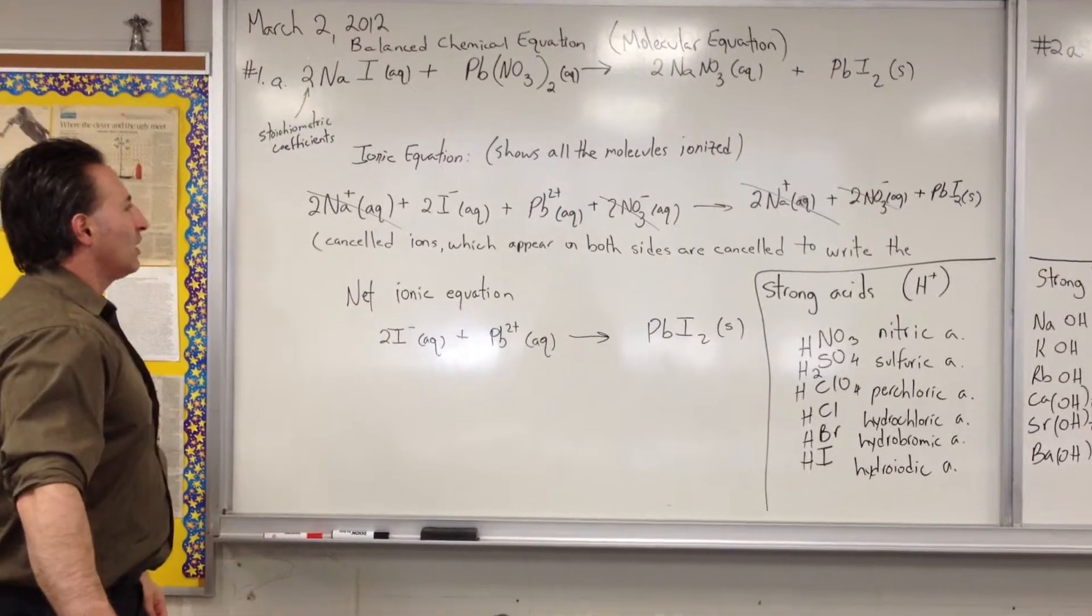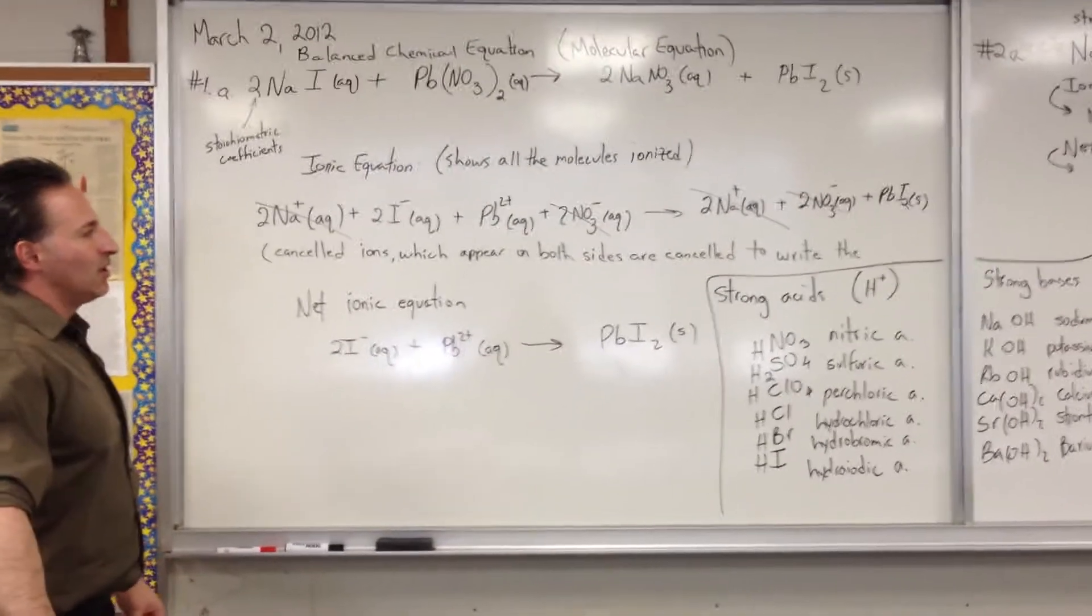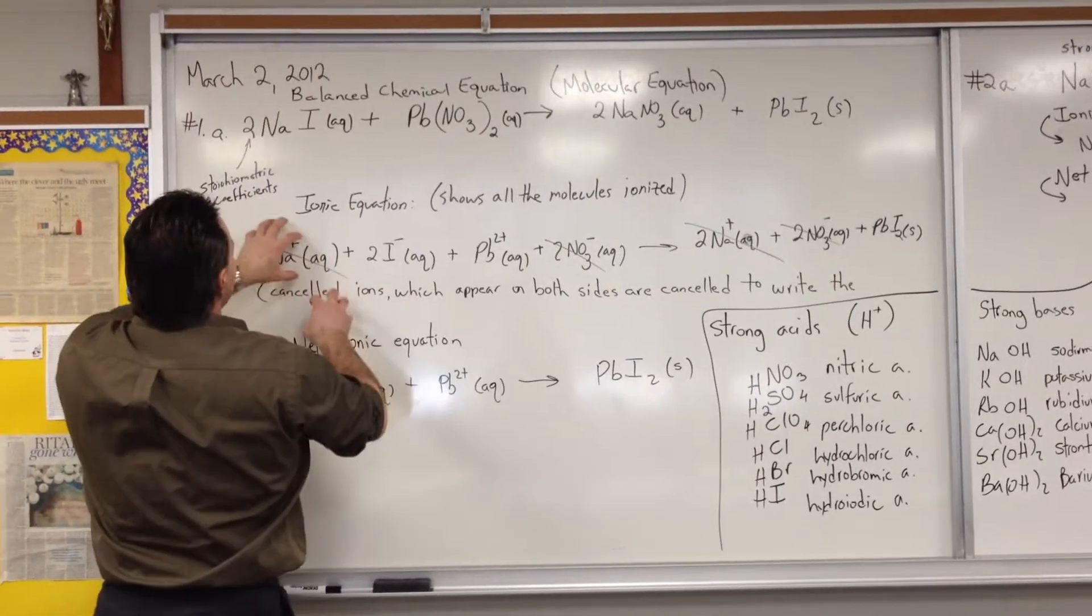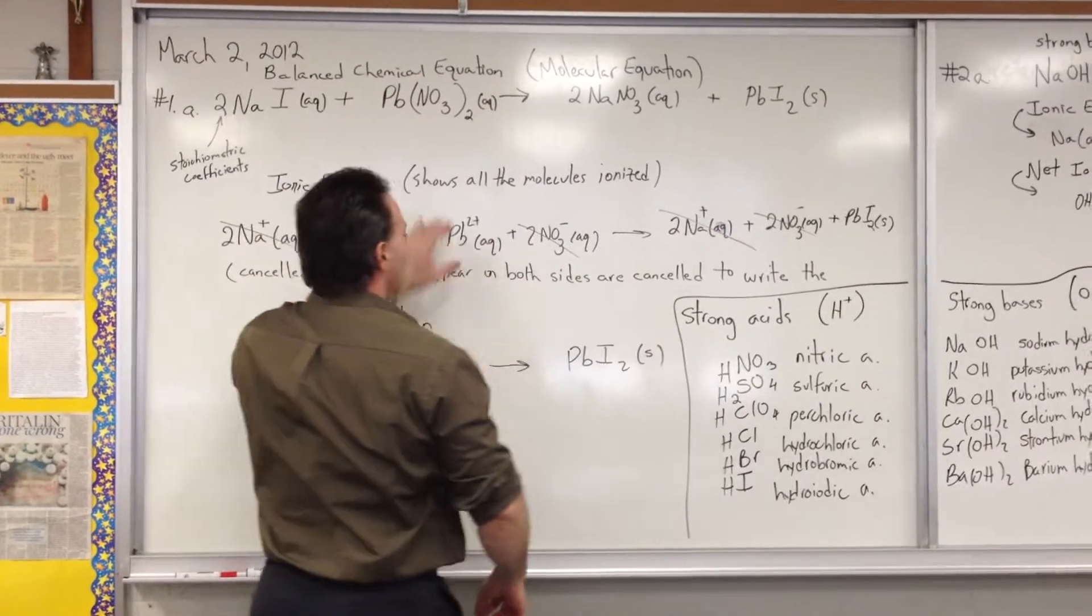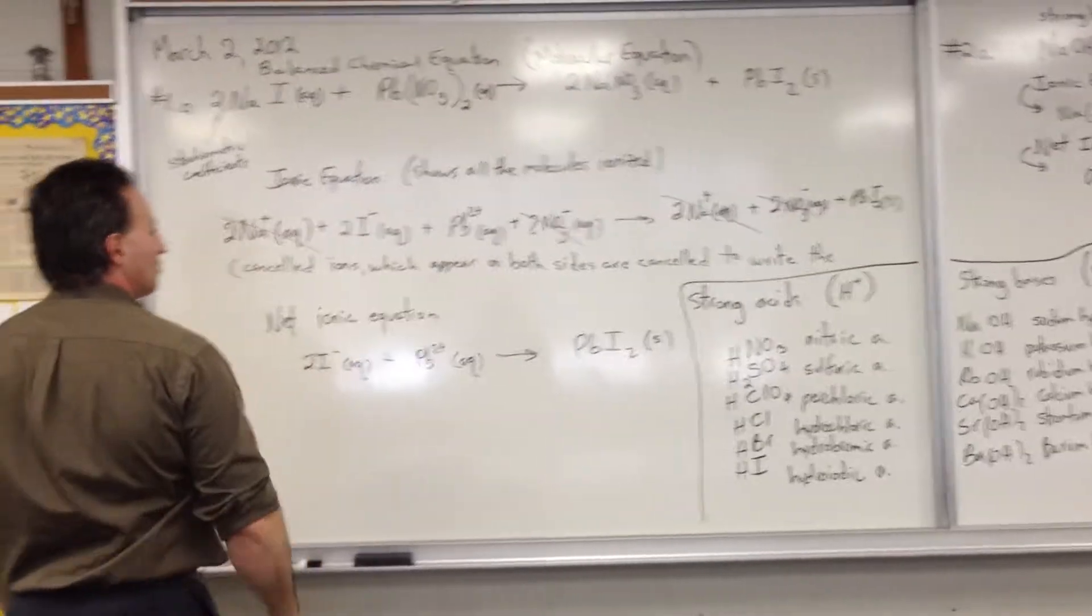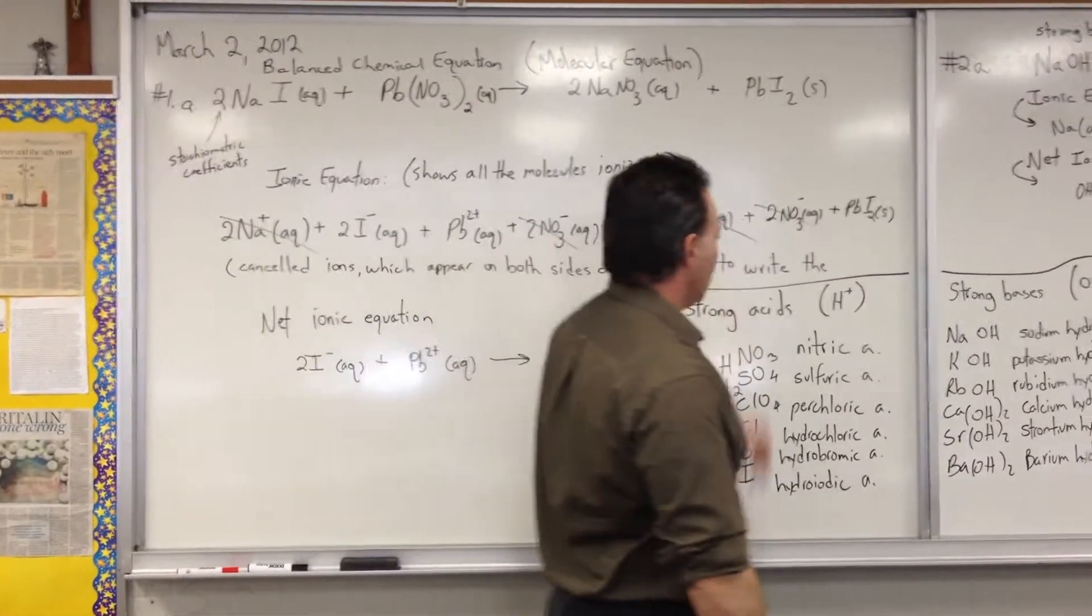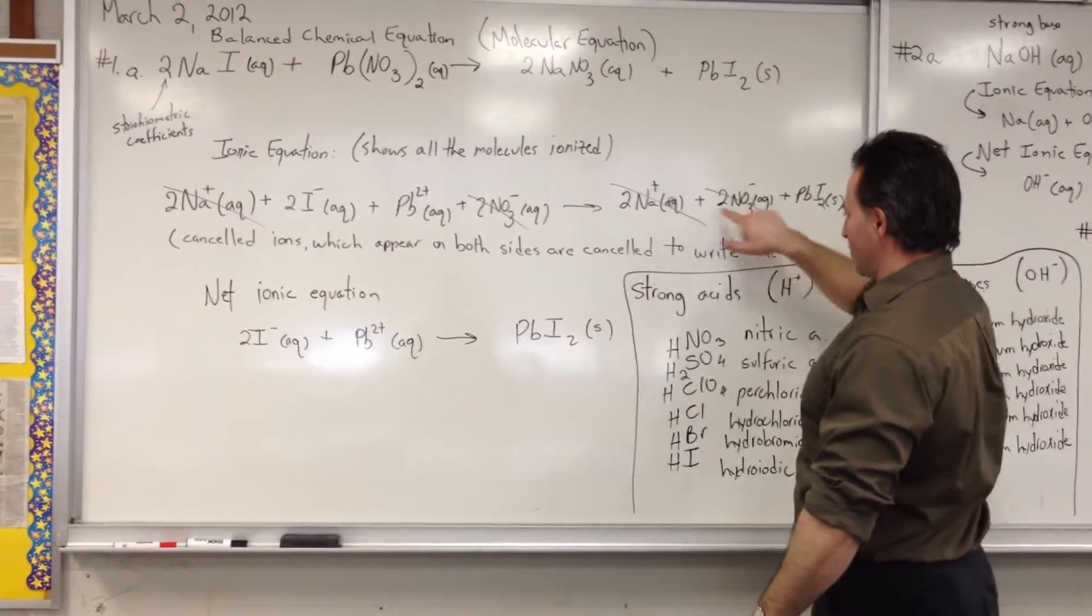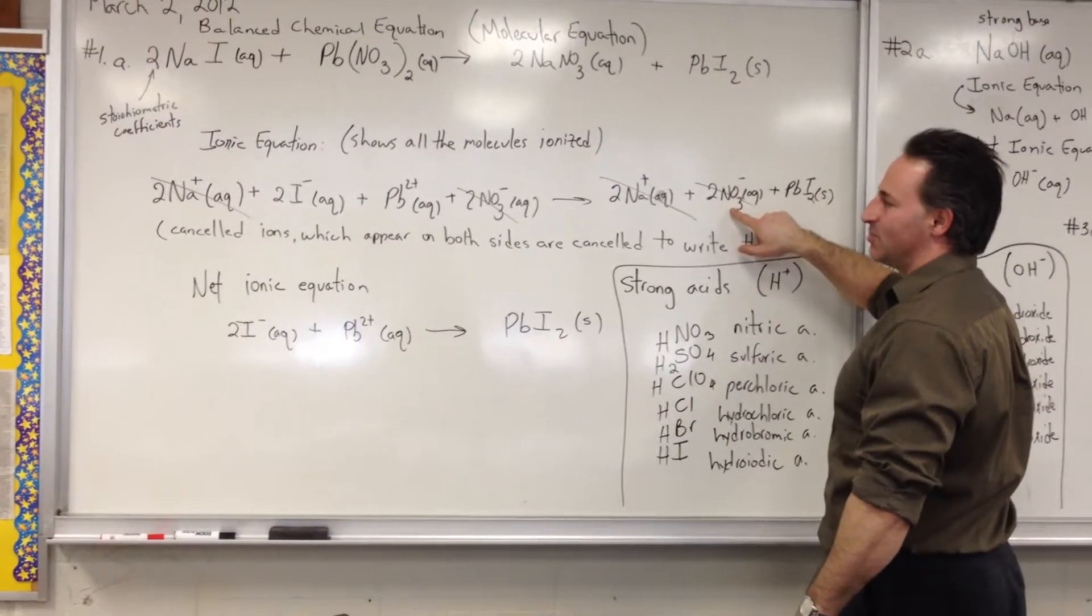The ionic equation shows all the molecules as they appear in aqueous solutions. So this molecule breaks apart into sodium ions and iodide ions. This molecule breaks apart into plumbus ions and nitrate anions. All of them are symbolized with an aqueous to show that they're dissolved in the water. On the other side of the equation, you see the product forming. Here it is, a solid. Whereas the other two things, the sodium cations and the nitrate anions, stay in solution. So they're spectators, spectator ions.